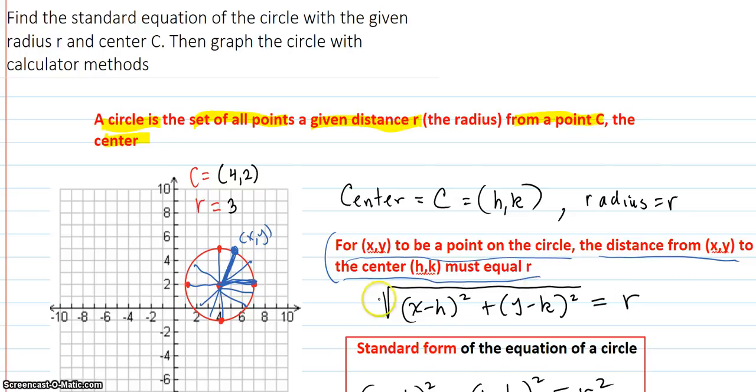This is the distance formula right here. That's the distance between (x, y) and (h, k). Just the distance formula, so that has to turn out to equal r, because r is that distance every time.